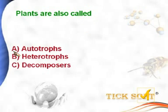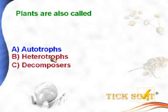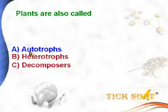Plants are also called — options: (a) autotrophs, (b) heterotrophs, (c) decomposers. Plants are called autotrophs because they prepare their own food through photosynthesis. Heterotrophs depend on other organisms for food. Decomposers feed on dead and decaying matter. Plants prepare their own food, so option A, autotrophs, is the answer.